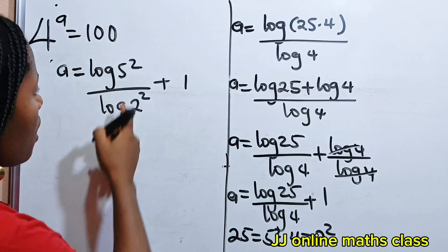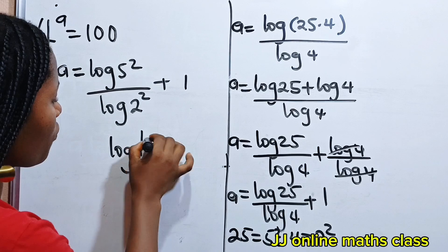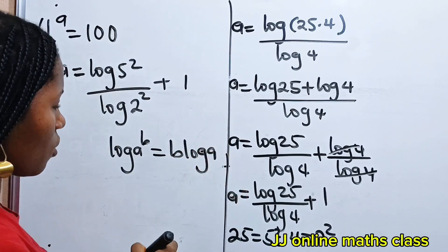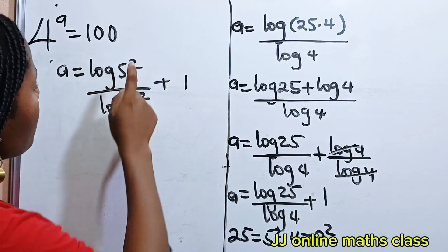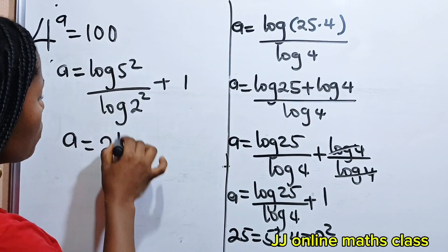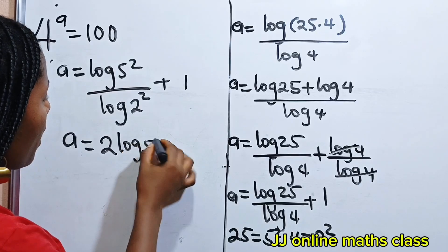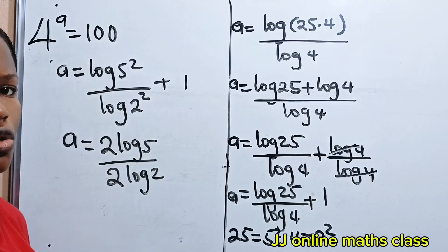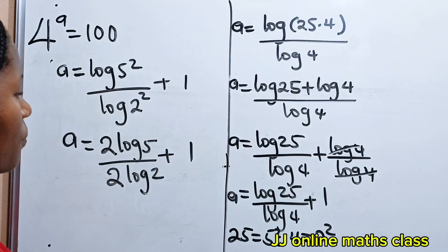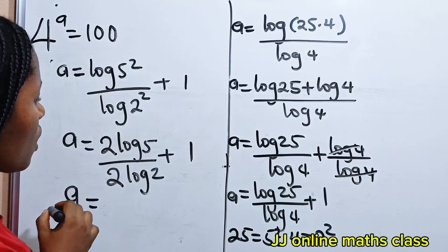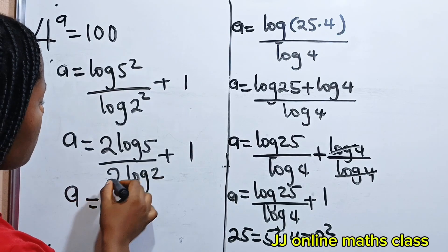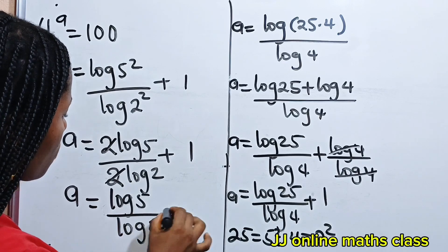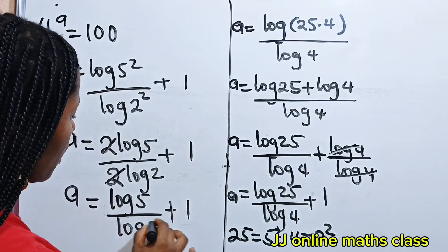So that means we can write this as A is equal to log 5 squared divided by log 2 squared plus 1. Now remember that when you have log A raised to the power of B, this is equal to B multiplied by log A. So that means we can write this as A is equal to 2 multiplied by log 5 divided by 2 multiplied by log 2, plus 1. Then this 2 and this 2 cancel, and we have log 5 divided by log 2 plus 1.